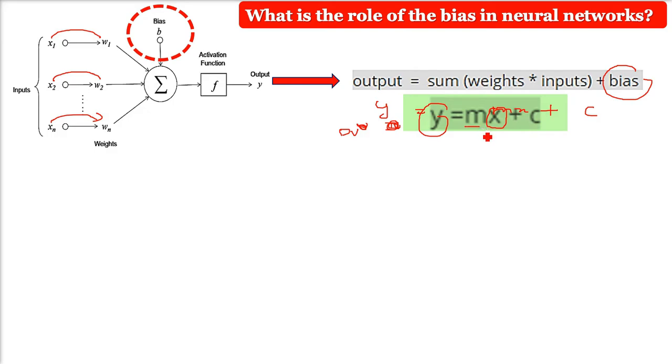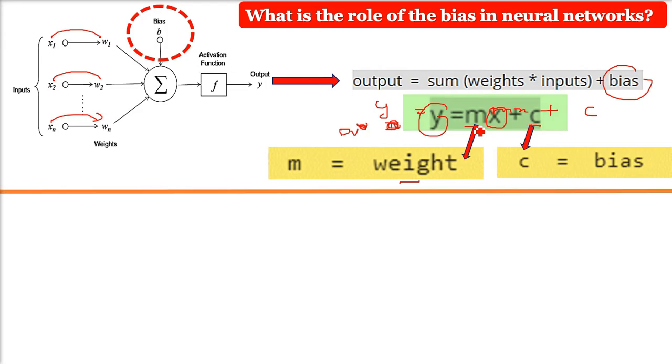This m is the weight and c is our bias. m corresponds to the weight and c corresponds to the bias. But what will happen if we don't give the bias?